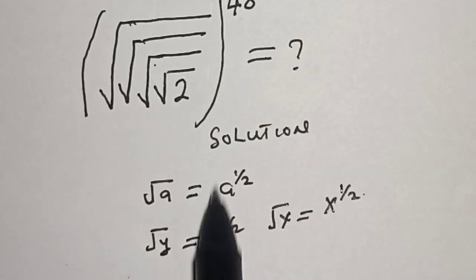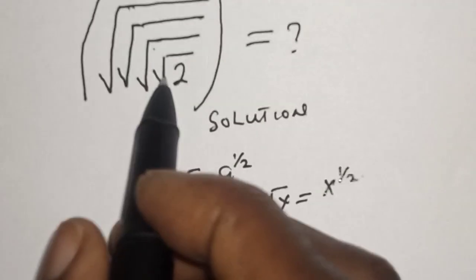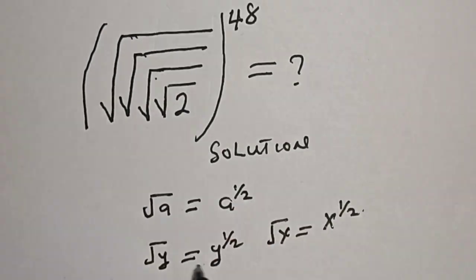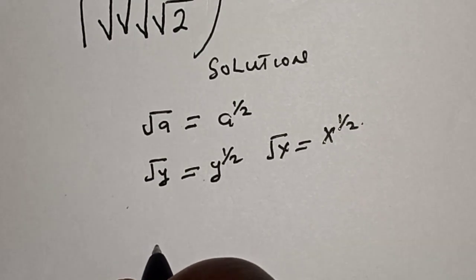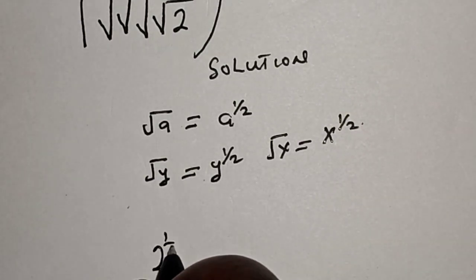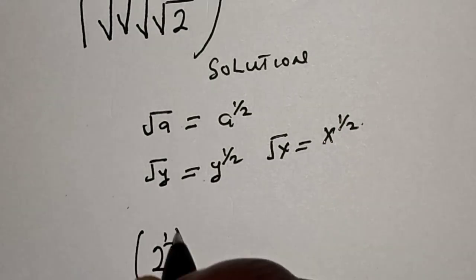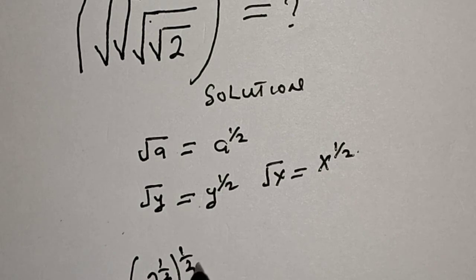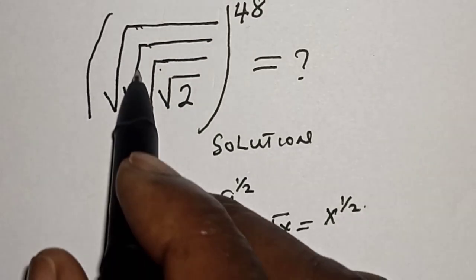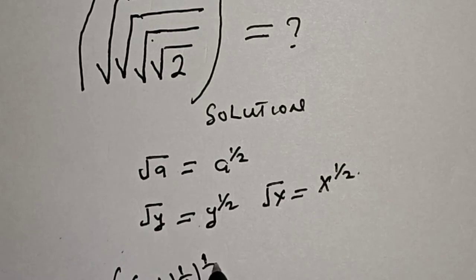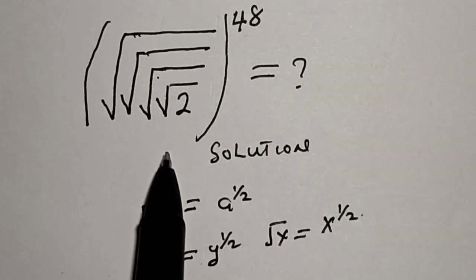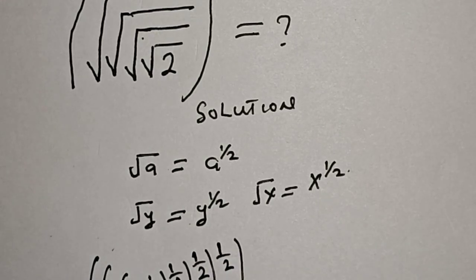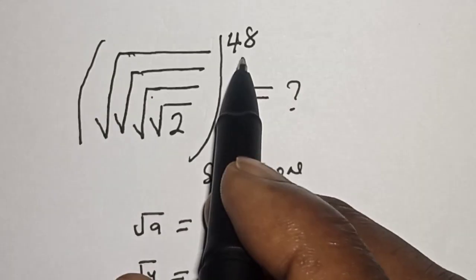Now, this is root 2, with another root, another root, and another root, all raised to the power of 48. This can be written as 2 raised to the power of 1 over 2, then raised to the power of 1 over 2, then raised to the power of 1 over 2, then raised to the power of 1 over 2, all raised to the power of 48.